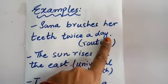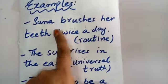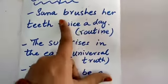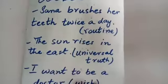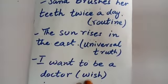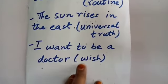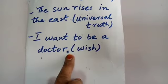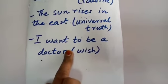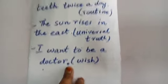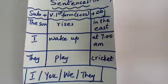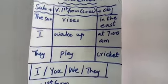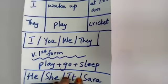For example: 'Sana brushes her teeth twice a day' — you can see a full stop at the end and the word 'not' is not used, and there is no question. 'The sun rises in the east.' 'I want to be a doctor.' These are all affirmative sentences.